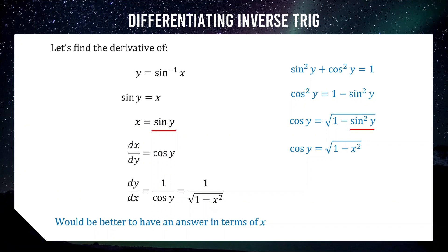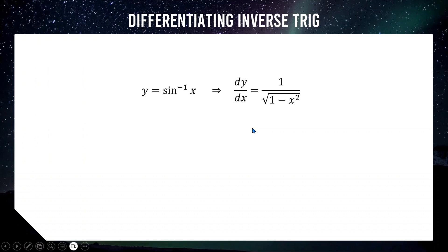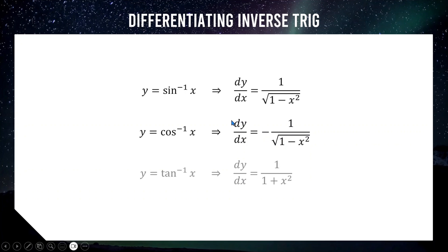It seems strange that we start with a trigonometric function and end up with a derivative that has no visible trigonometry, but it's hidden in the square root. Going forward: the derivative of sine inverse x is 1 over the square root of 1 minus x squared. For cos inverse x it's very similar but negative: negative 1 over the square root of 1 minus x squared. For tan inverse x it's 1 over 1 plus x squared — no square roots needed.